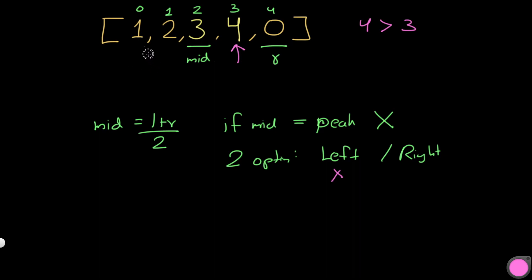We move L to mid + 1. The new search space has L at index 3 and R at index 4. The new mid is (3 + 4) / 2 = 3 (rounded down). At index 3, the value is 4. We check: 4 is greater than 3, and 4 is greater than 0. So mid is a peak and we return index 3.